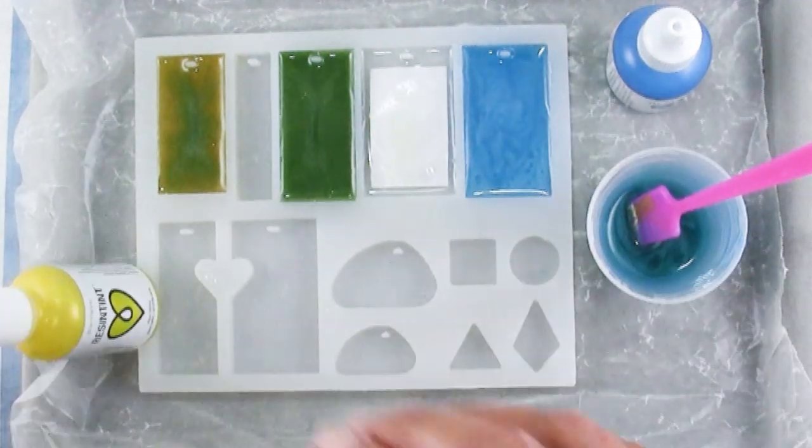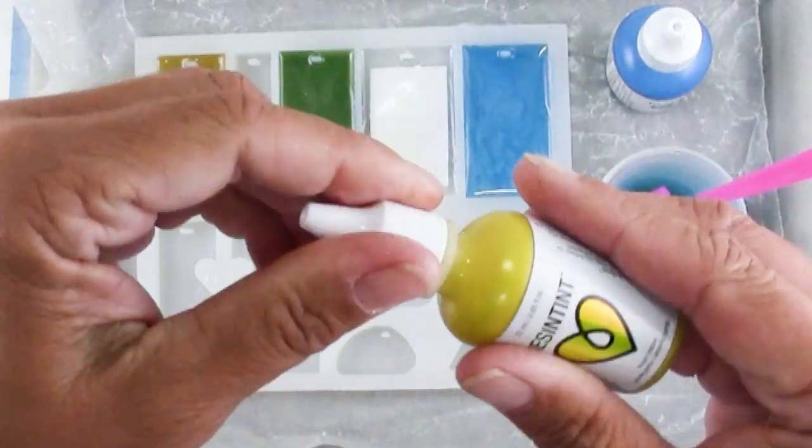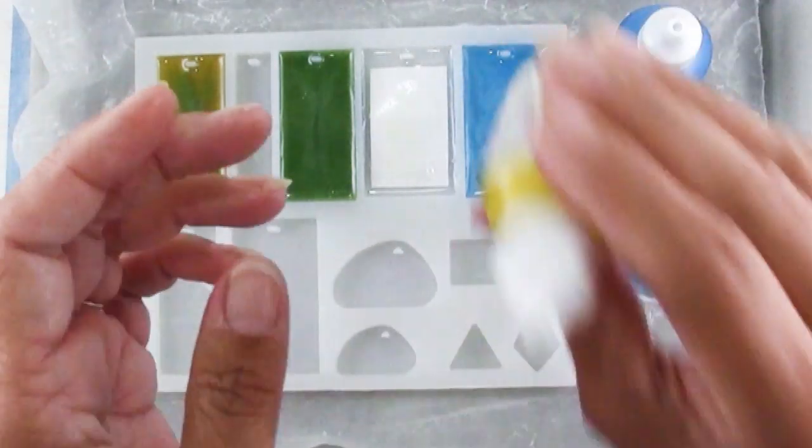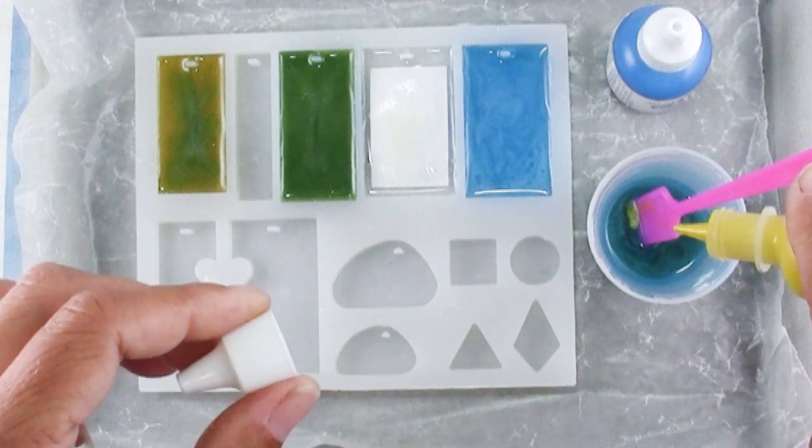And these are resin tints from Art Resin and they have balls in them. They have like a mica sheen. They're pearly. So do make sure to mix them up. Shake them well before you use them.